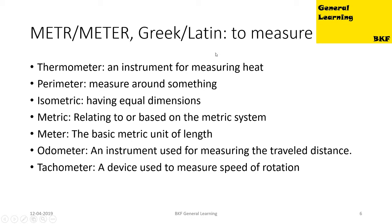The next root is 'meter', it has a Greek as well as a Latin origin and it means to measure. 'Thermometer' is an instrument for measuring heat; it's a noun. 'Perimeter' is a measure around something; it's a noun. 'Isometric' is an adjective meaning having equal dimensions. 'Metric' means relating to or based on the metric system. 'Meter' is a noun — the basic unit of length.